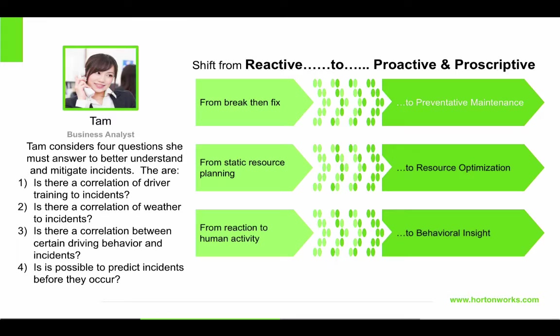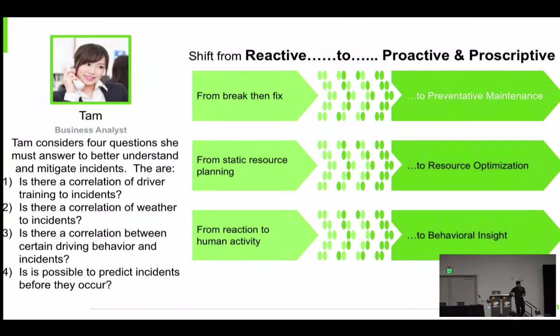To accomplish this goal, they want a paradigm shift — it's not waiting for things to happen, but actually predicting them. It involves a huge shift from being reactive to proactive, to seeing things before they actually occur — almost being oracular. Tam poses the following questions: what is the relationship between certain factors and driver behavior? Is there a correlation of driver training to incidents? Does the weather affect incidents? Is there certain driving behavior that can tell us ahead of time that an accident is happening?